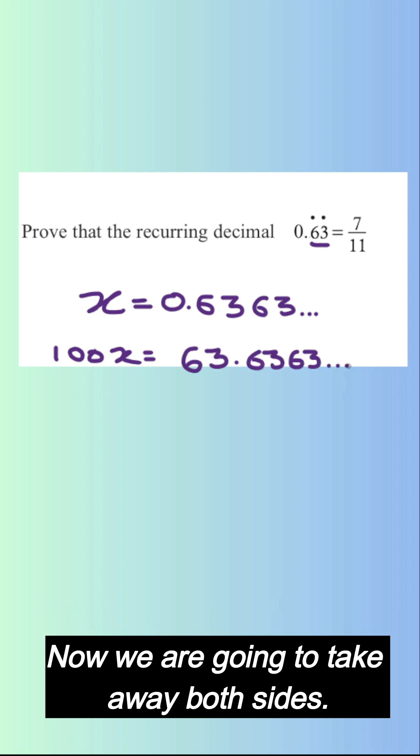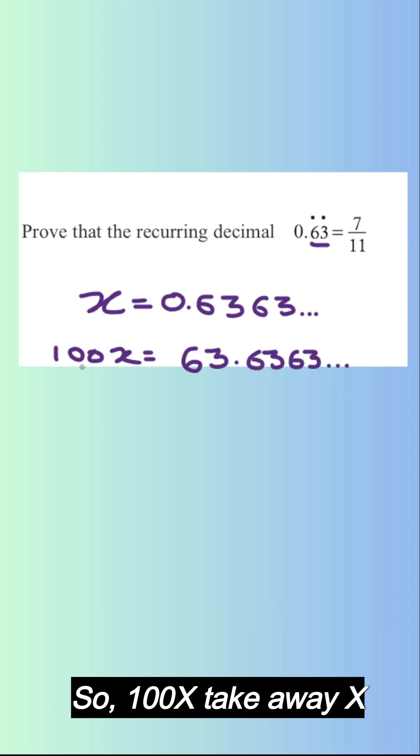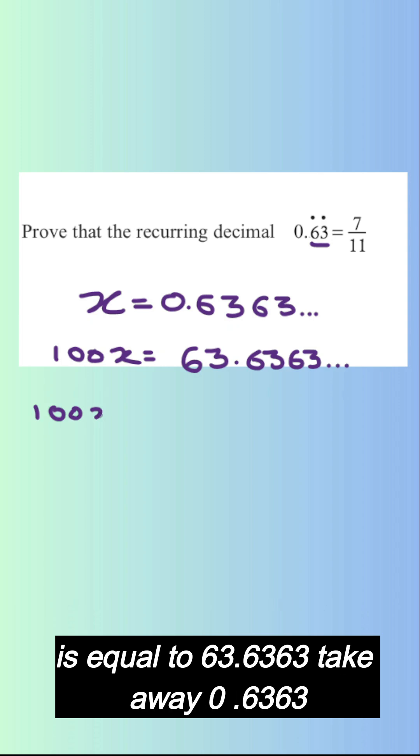Now we are going to take away both sides. So 100x take away x is equal to 63.6363 take away 0.6363.